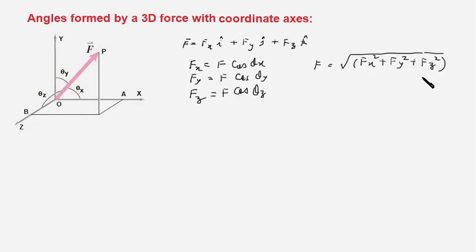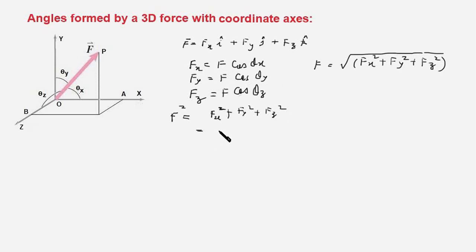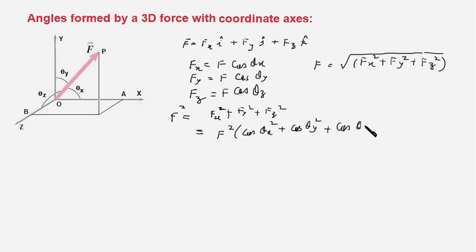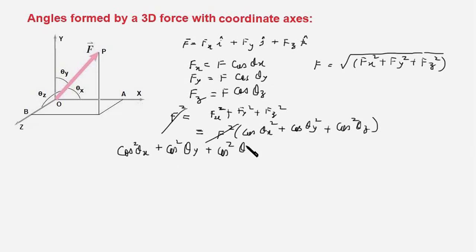Since the magnitude F equals the square root of the sum of the squares of the three components, we can write F² = Fx² + Fy² + Fz². Substituting F·cos(θx) in place of Fx (and similarly for y and z), we get F²(cos²θx + cos²θy + cos²θz) = F², and F² cancels on both sides, giving cos²θx + cos²θy + cos²θz = 1.